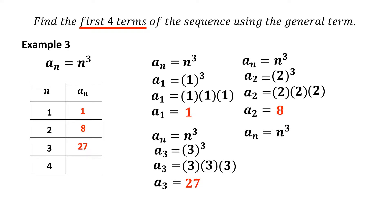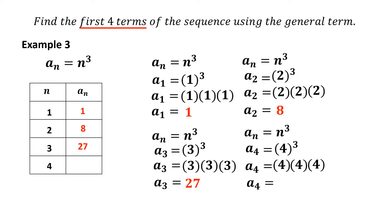Lastly, the fourth term using a sub n equals n cubed. Substitute n equals 4: a sub 4 equals 4 cubed, meaning 4 times 4 times 4, which equals 64. Therefore, the fourth term is 64. The first four terms are 1, 8, 27, and 64.